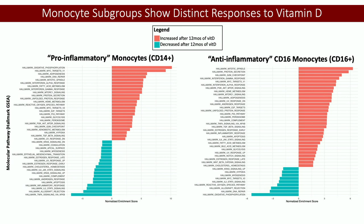We used special computer software to identify major pathways that change in these cell subsets. This is the power of single-cell sequencing — we can see very distinct pathways, in some cases with exactly opposite effects of vitamin D on different monocytes. In our pro-inflammatory monocytes, the top pathway is a mitochondrial pathway called oxidative phosphorylation. In our anti-inflammatory monocytes, the pathway that decreased the most was the same pathway — so they were in many cases working in opposite directions.